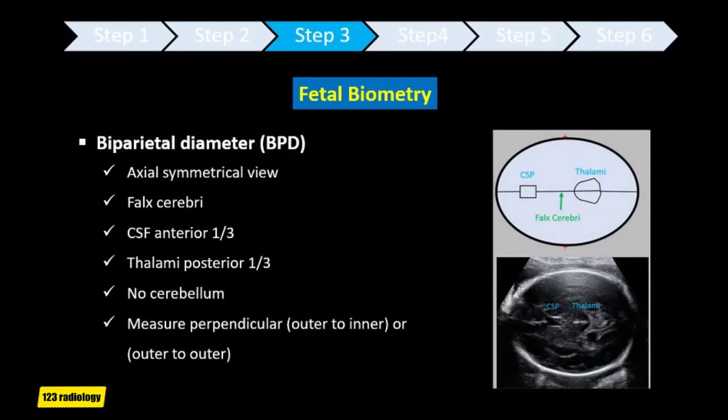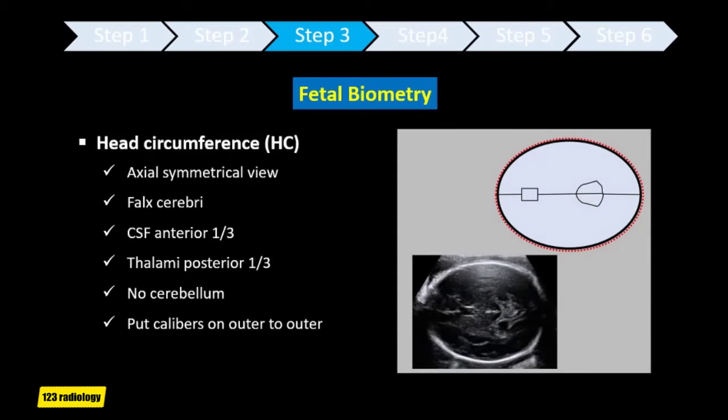Biparietal diameter is measured on a symmetrical axial view at the level of the thalami and cavum septum pellucidum. The cerebellar hemispheres should not be visible in this scanning plane. The measurement is taken from the outer edge of the proximal skull to the inner edge of the distal skull. The head shape may be flattened or rounded as a normal variant, which may make measurement of the head circumference more reliable than biparietal diameter for estimating gestational age. Head circumference is measured at the same level as the biparietal diameter, around the outer perimeter of the calvarium, and is not affected by head shape.